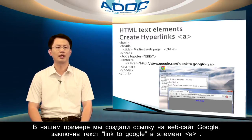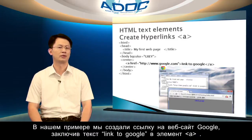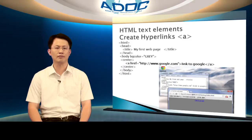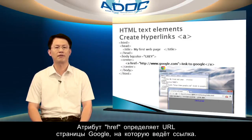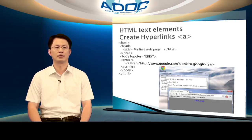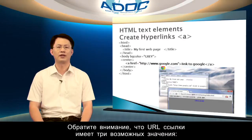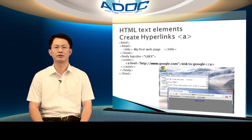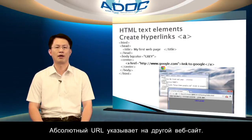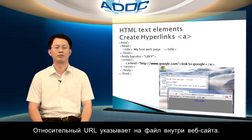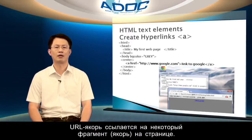In our example, we create a link to the Google website by wrapping the text 'linked to Google' with an A element. The href attribute specifies the URL of the page the link goes to. Note that the URL of the link has three different possible values: an absolute URL points to another website, a relative URL points to a file within a website, or an anchor URL points to an anchor within a page.